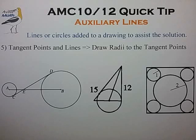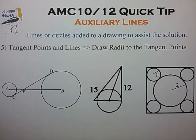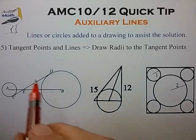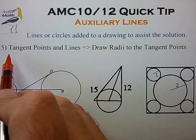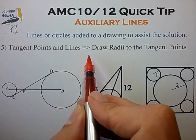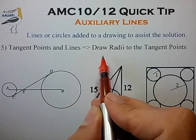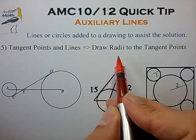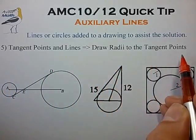The description section will link to the full list of suggestions for common auxiliary lines used in the AMC. In this video we'll look at suggestion 5 from that list, which states that if you have tangent points and lines in a drawing, then go ahead and add any radii to the tangent points.